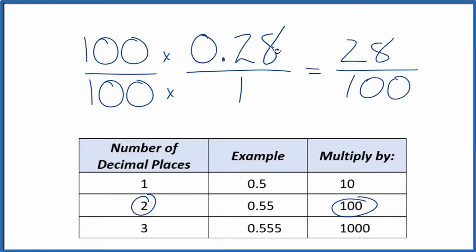And now we have our fraction. So we've converted 0.28, the decimal, to the fraction 28 over 100.